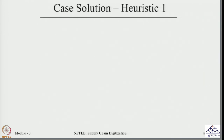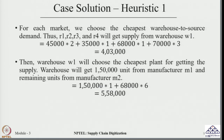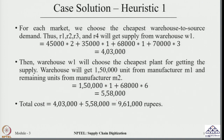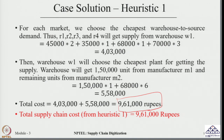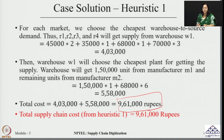Following Heuristic 1, warehouse one selects the cheapest plant first — manufacturer one — and then the total transportation cost for all possible combinations is calculated. The total transportation cost comes to 9,61,000 rupees. These calculations are provided in the Excel sheet attached to this session. So following Heuristic 1, our total supply chain cost is approximately 9,61,000 rupees.